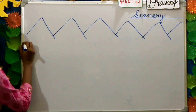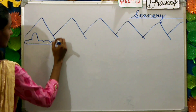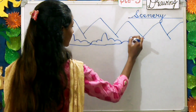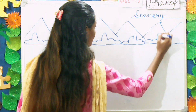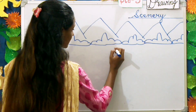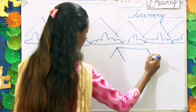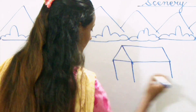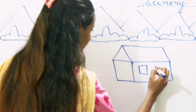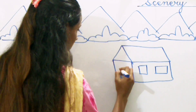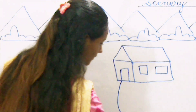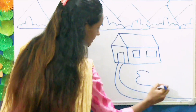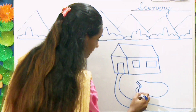Next step, we are going to draw some bushes around it. Let's draw a house, then the windows and the gate. Then we are going to make a path and a pond in between the house with a few shrubs.